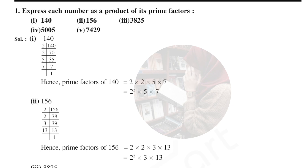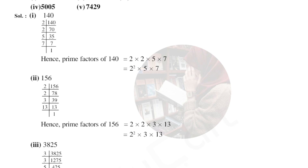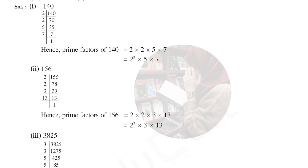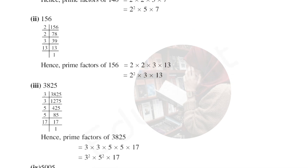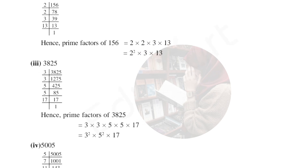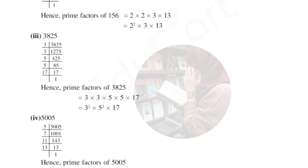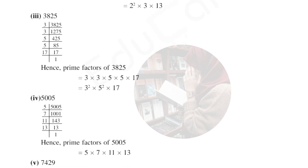I think you don't need any explanation for these sums — we all know how to take out the LCM for each number. Prime factors are based on prime numbers: 2, 3, 5, 7, 11, 13, 17, 19, and so on. The definition of a prime number is a number divisible only by one and itself. After finding the prime factors, write them in product form — that is, multiplication form. For example, the second sum is 2 × 2 × 3 × 13, which is written as 2² × 3 × 13.